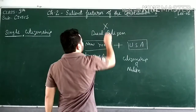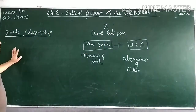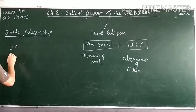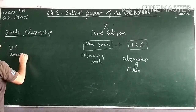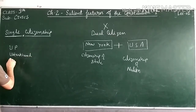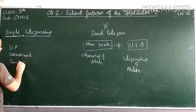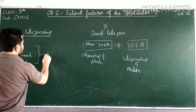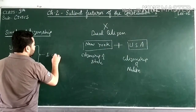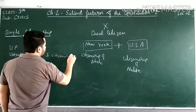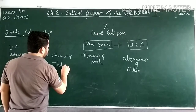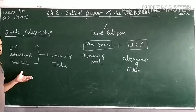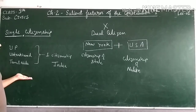We do not have this kind of citizenship in India. We have single citizenship. Single citizenship means whether you are from Uttar Pradesh, Uttarakhand, Tamil Nadu, or anywhere in India, all people will have only one citizenship — the citizenship of India. We will not say 'I am a citizen of Uttarakhand' or 'I am a citizen of Tamil Nadu.' All people of our country enjoy the same types of privileges, rights, and duties throughout the country.